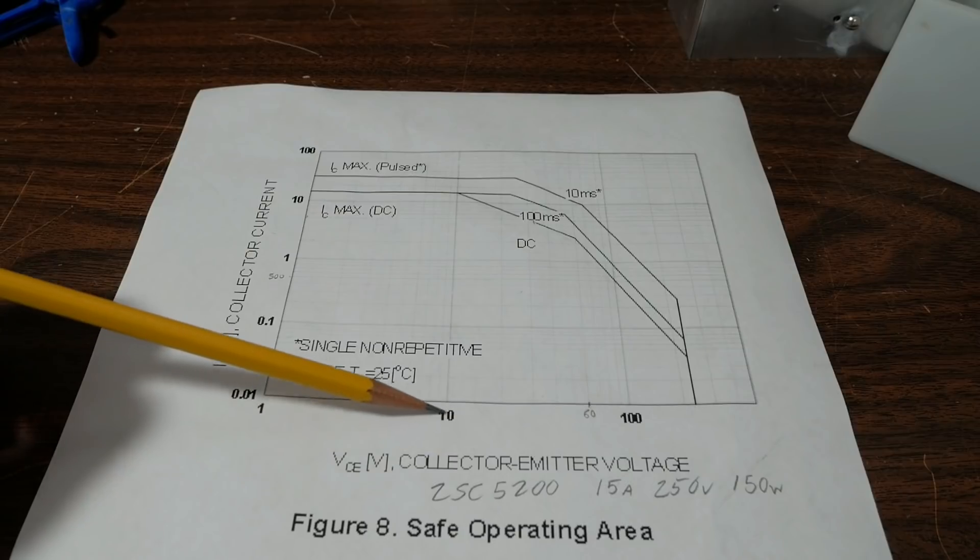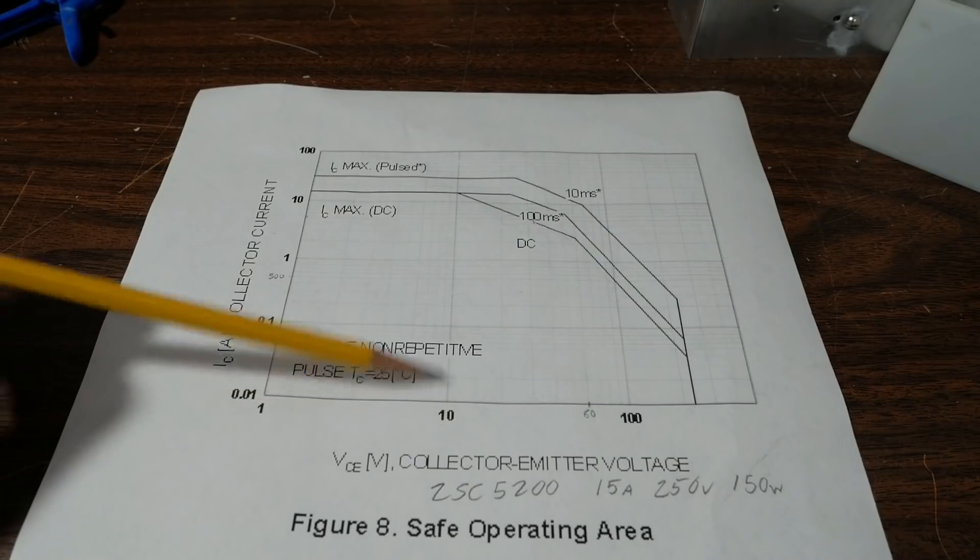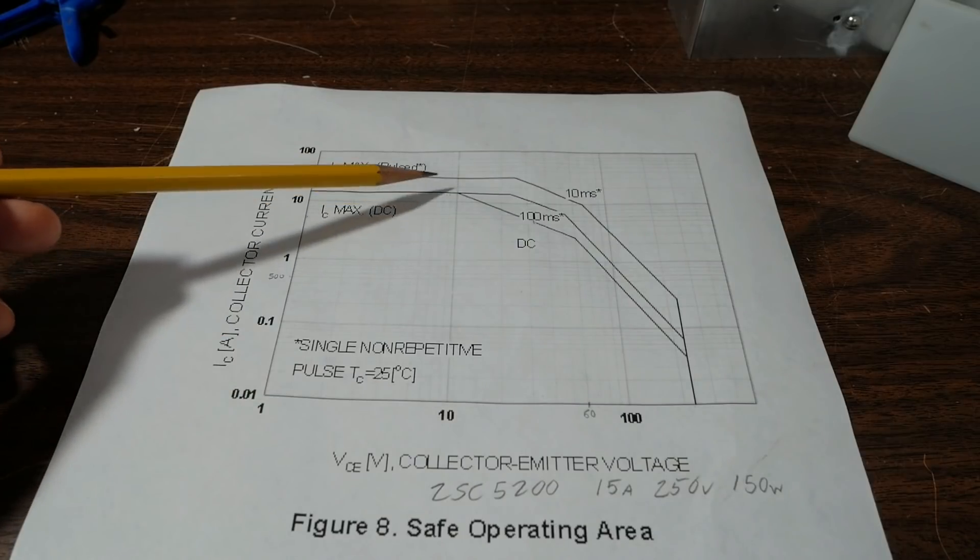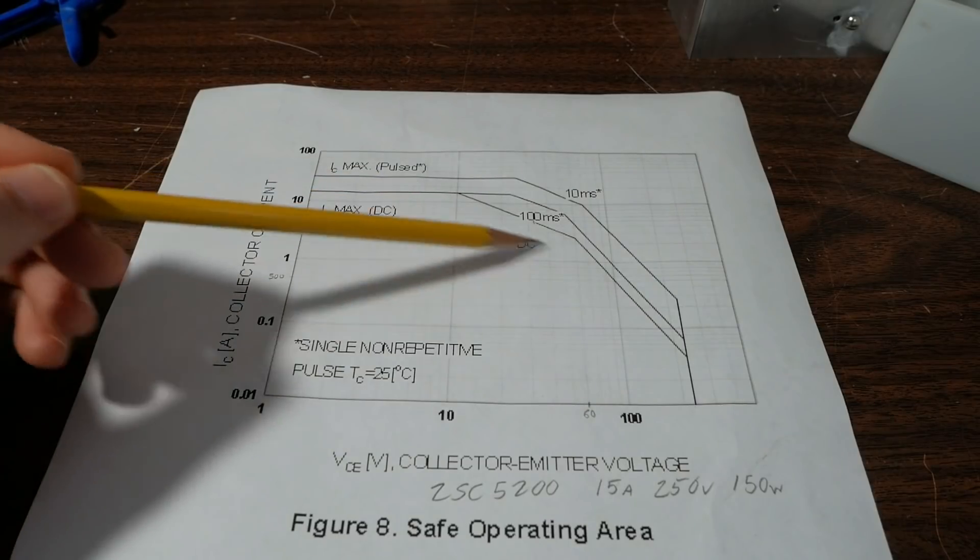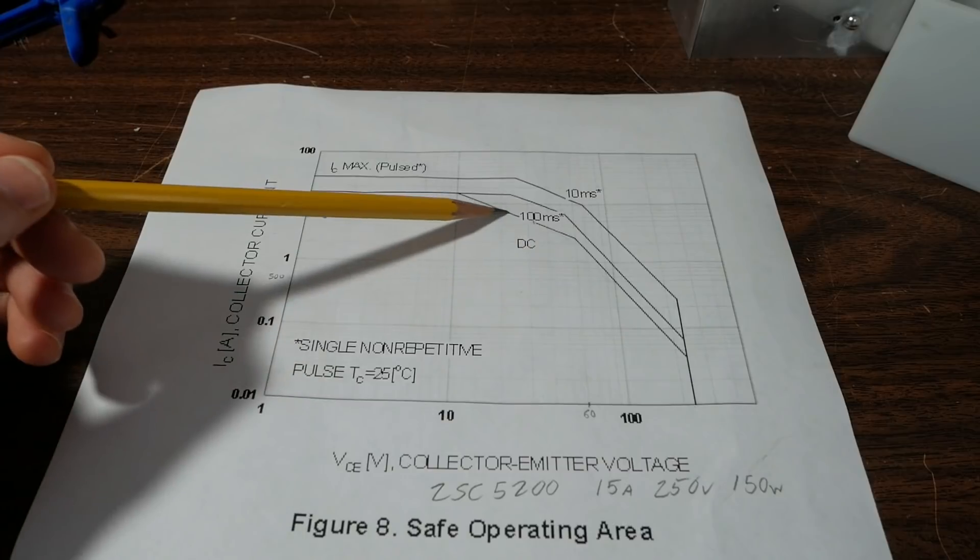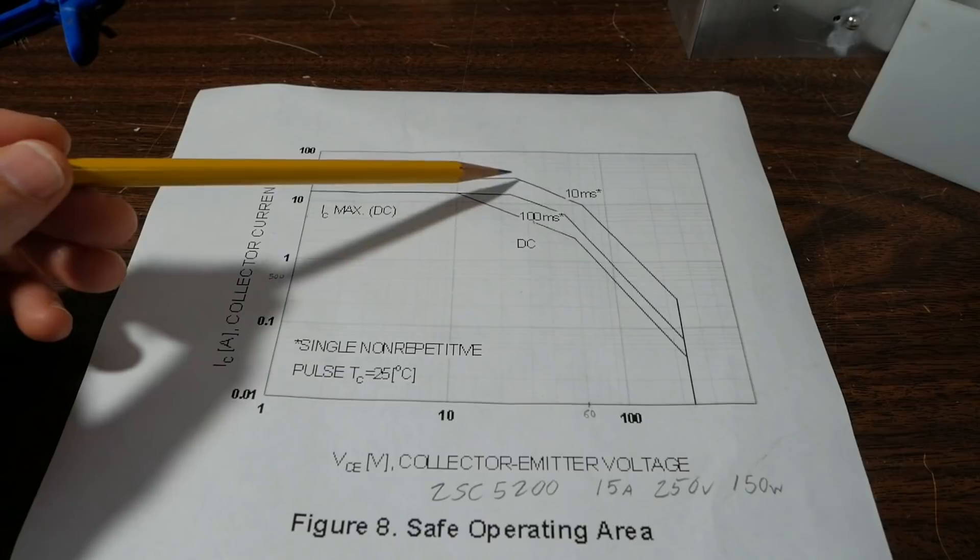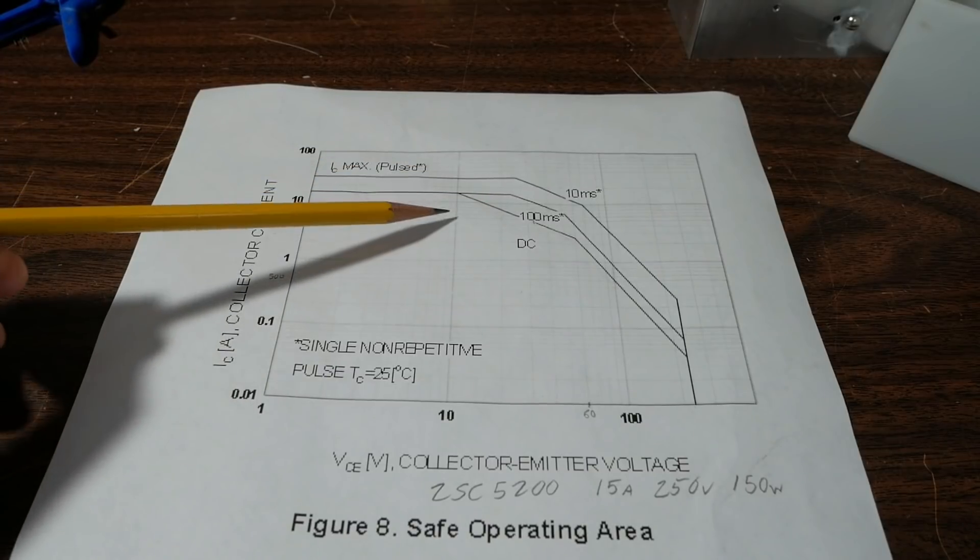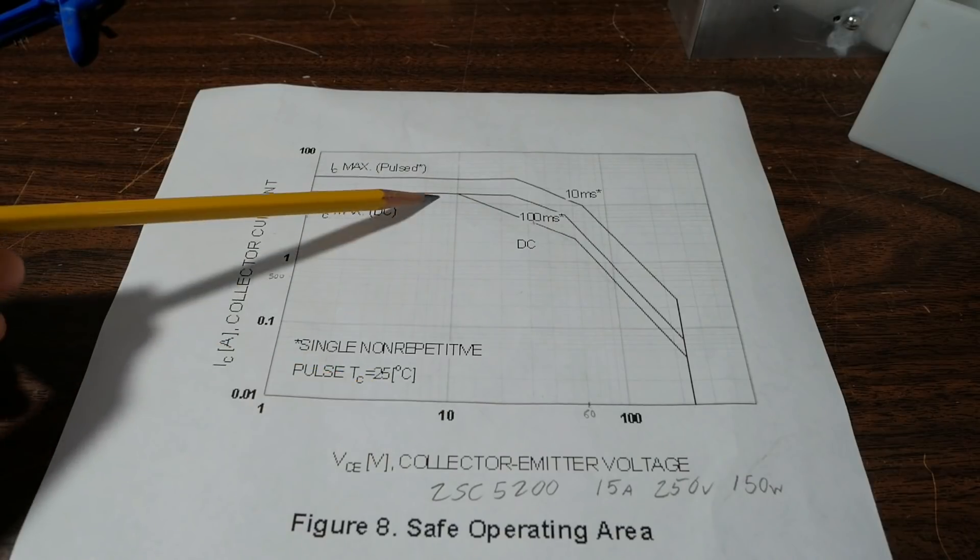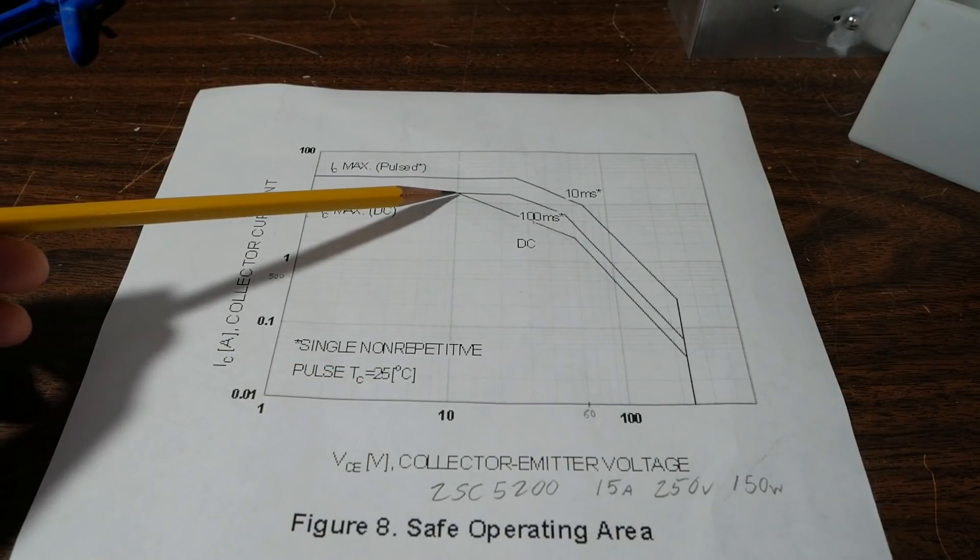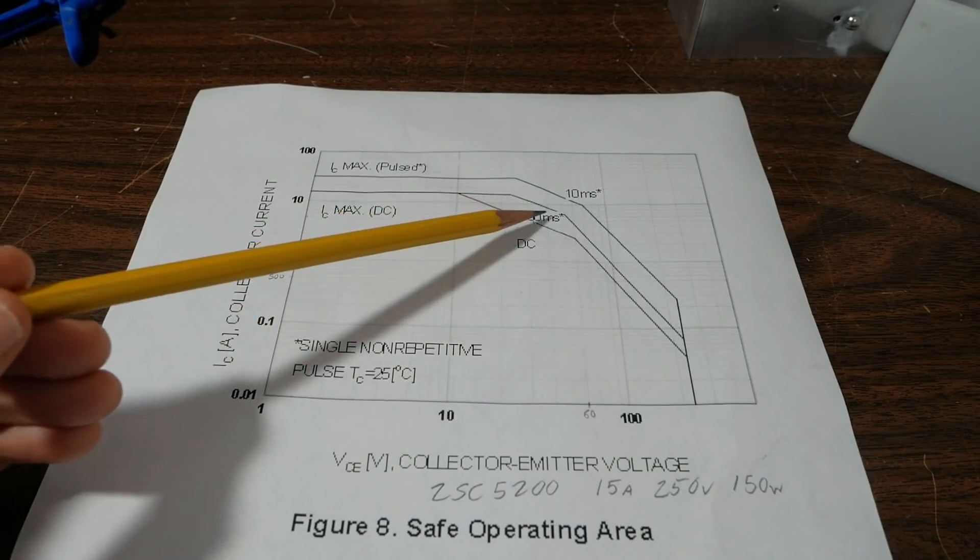Now, if we use an example of 150 watts divided by the 10 volts here, we get 15 amps. So, no problem there. And by the way, there's three lines. We have one for DC, we have a 100 millisecond pulse, and a 10 millisecond pulse. So that's why the graph breaks out into three different lines. So with the DC example, 15 amps times 10 volts is 150 watts, so we're right at the max. That's why you see this line break into a drop like this.